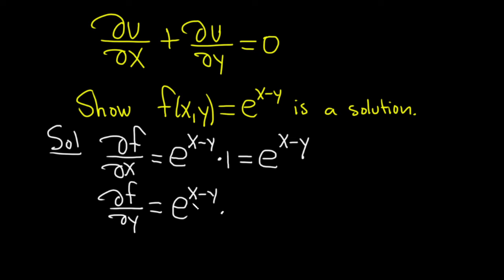This time we're treating x as a constant, its derivative is zero, then the derivative of -y is simply -1. Let's put the negative in front. So this equals -e^(x-y).